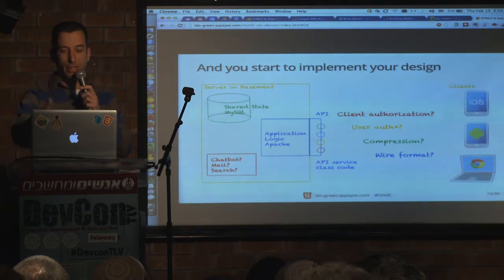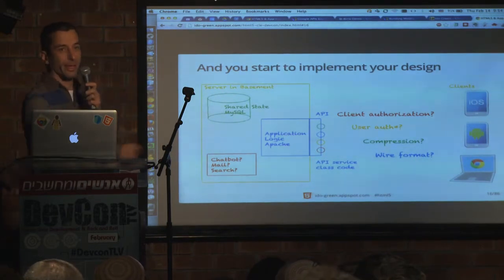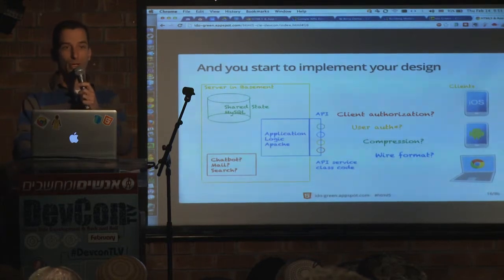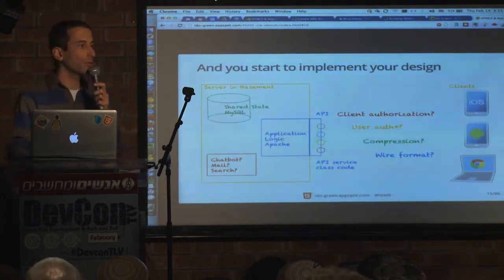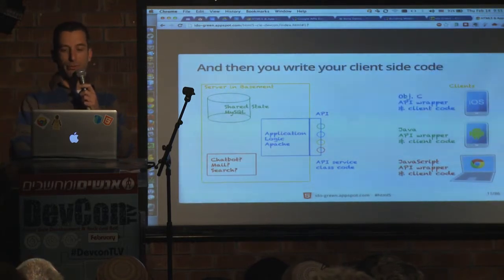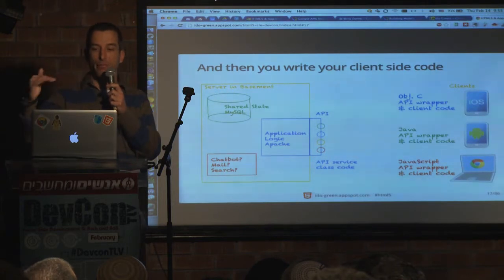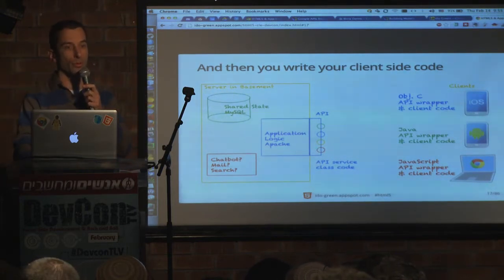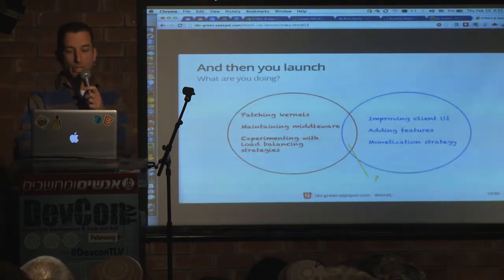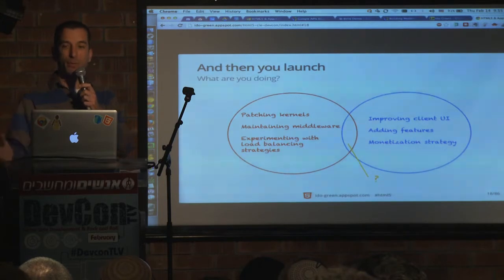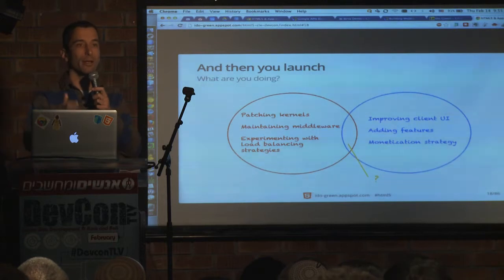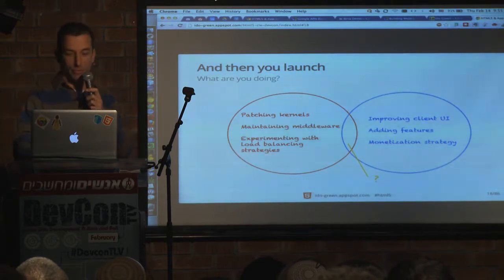When you start designing and implementing it, you see all the headaches that come up again and again: how do I do compression? How do I improve performance? What do I do with OAuth, with login, etc.? And you'll want to create each platform its own API wrapper so you can be productive and write your own logic on top of that platform. What we did in Cloud Endpoints is solve all those headaches and problems.